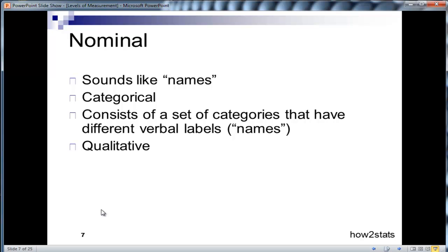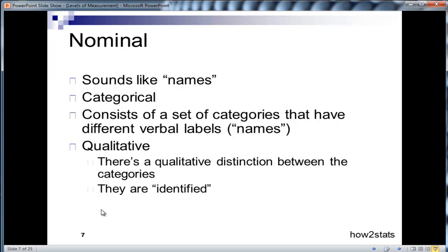It's also qualitative in nature. There's a qualitative distinction between the categories that are specified in a nominal measured variable. Another word is identified—we simply identify the various categories within that variable. There is no quantitative distinction made within a nominal scale.